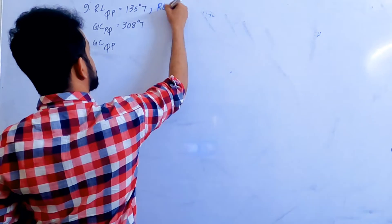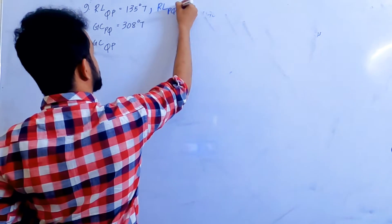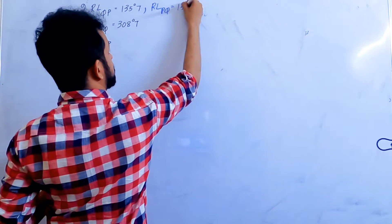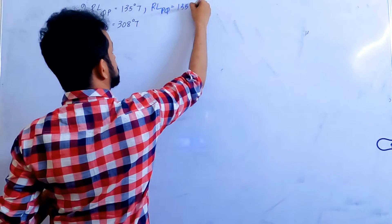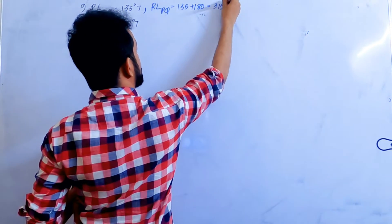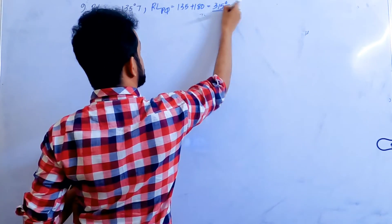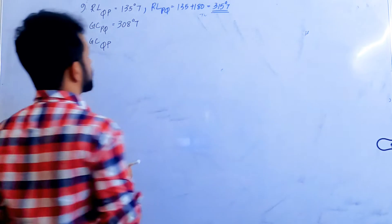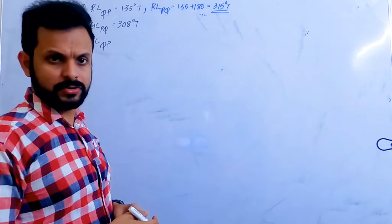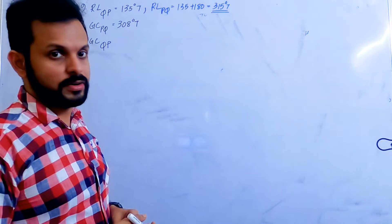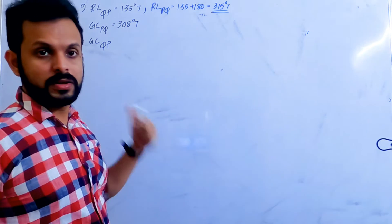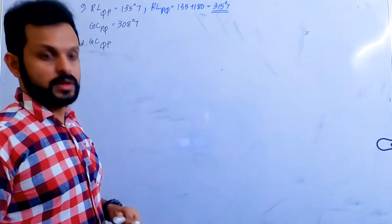So this rhumb line from P to Q will be 135 plus 180, that is 315. Look at these tracks — they are more in the western direction, not the eastern tracks. It's in the opposite direction.